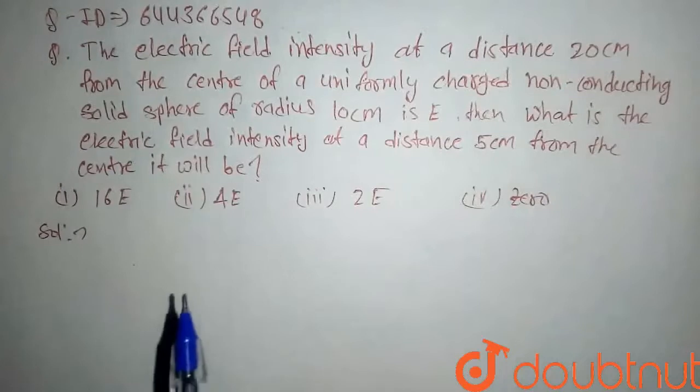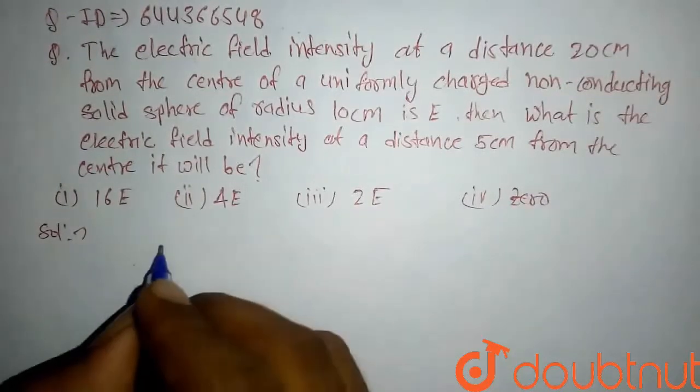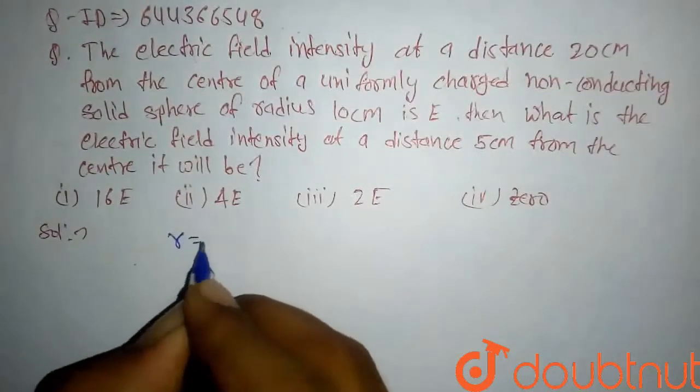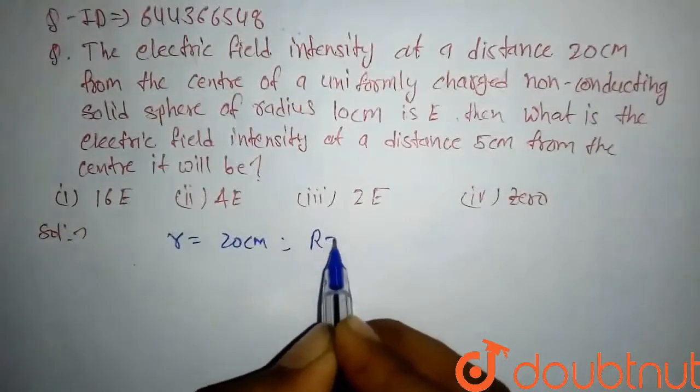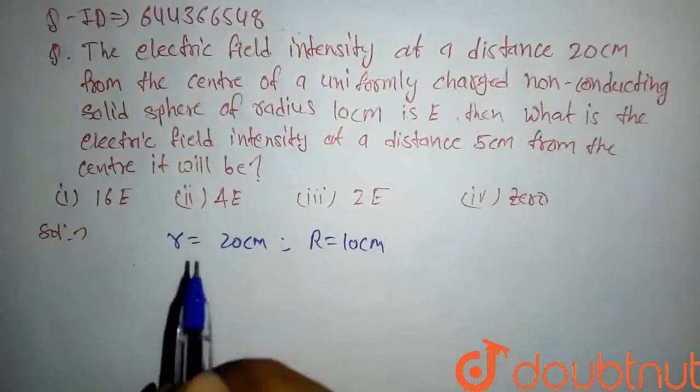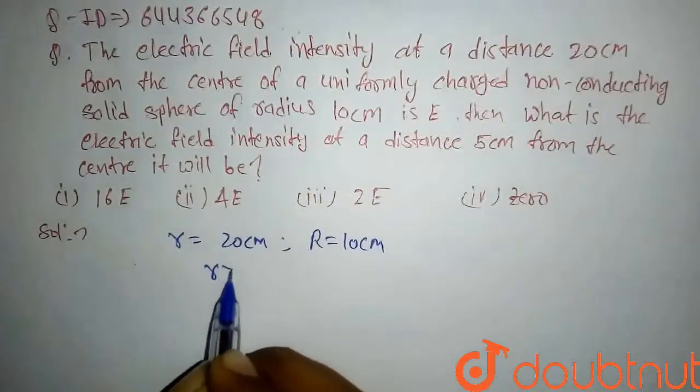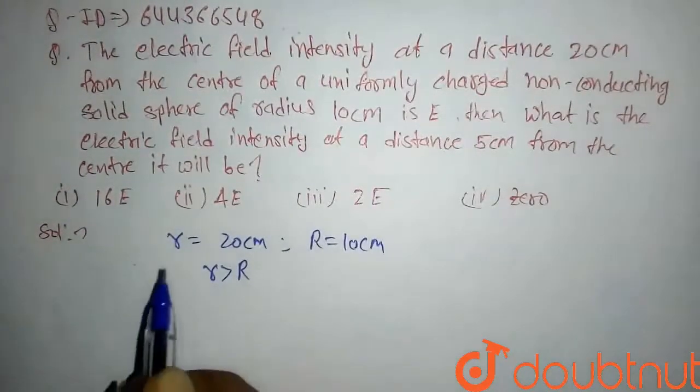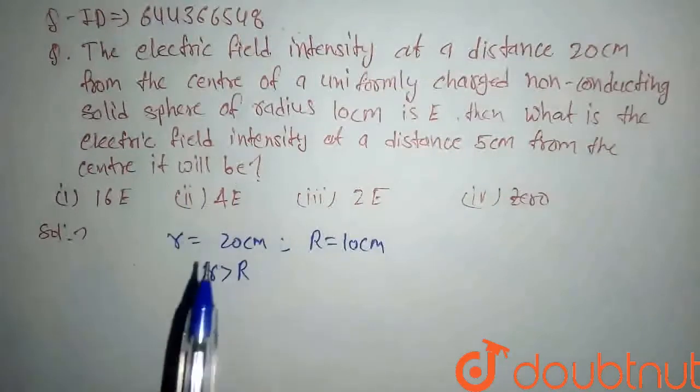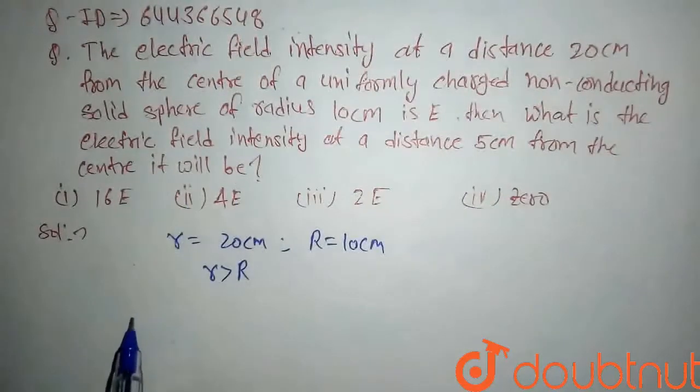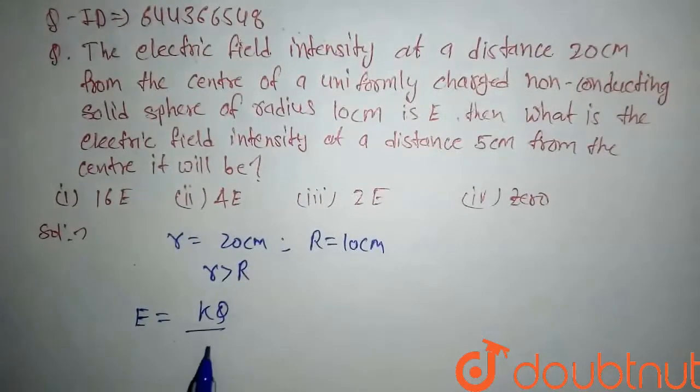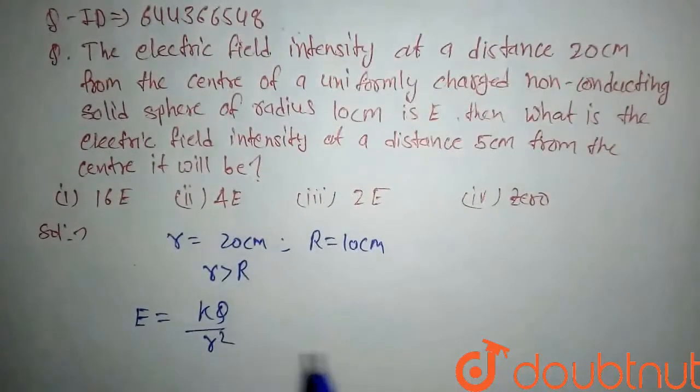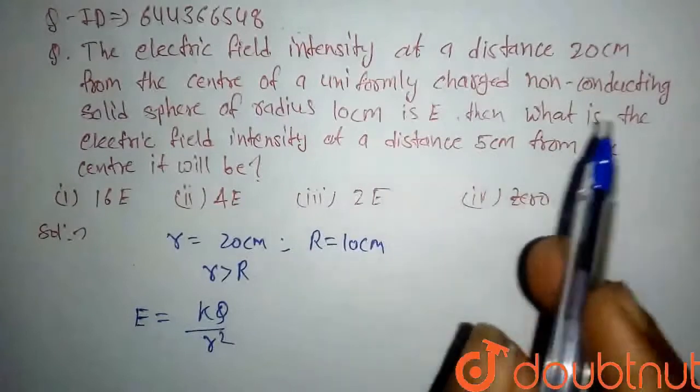So according to question, first we have r equal to 20 centimeter, also we have radius of sphere is 10 centimeter. So here we can say r is greater than capital R. Then for a non-conducting sphere, the electric field intensity is given by kQ upon r square.